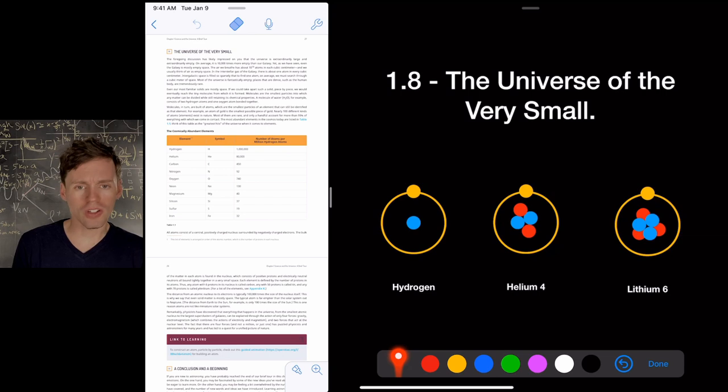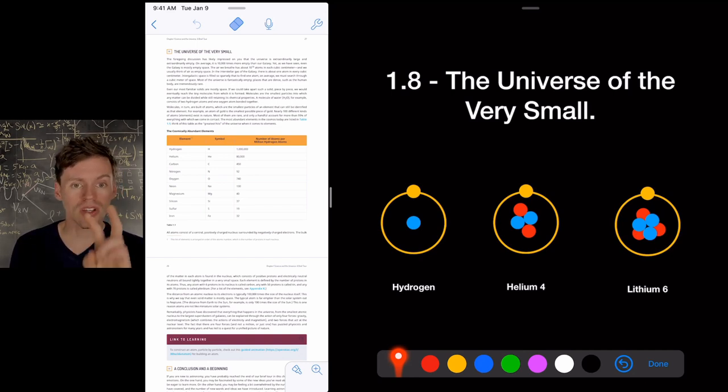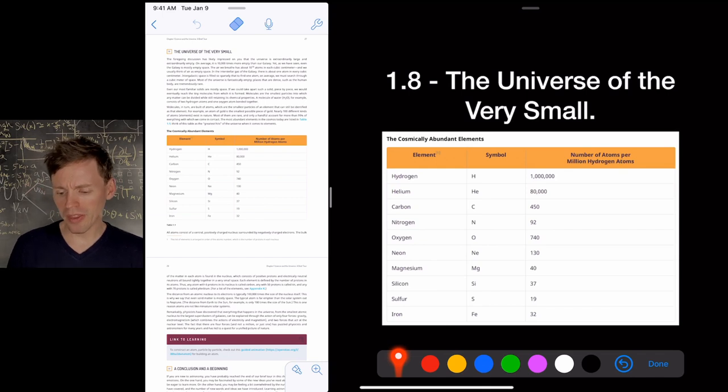So, we would call this helium four because it has four, two protons, which makes it helium, and then two neutrons, which gives a total of four particles in the nucleus. So, we call that helium four. And lithium six, six total particles. Three of them are protons. That's what makes it lithium, okay?